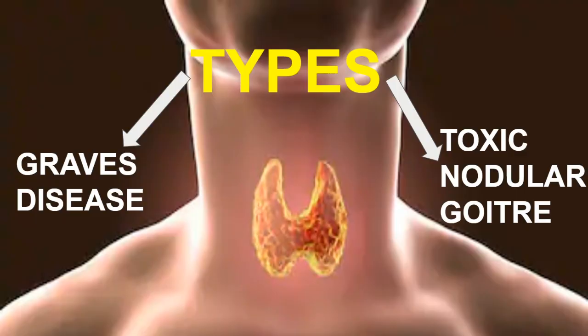Hyperthyroidism is actually of two types: Graves' disease and toxic nodular goiter. Now, what is the difference between these two?